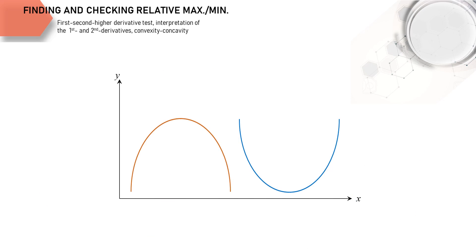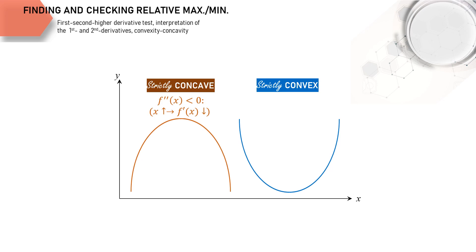Let's return for a moment to these two diagrams again. The curvature of the first function is referred to as strictly concave, while the opposite — the second function — is strictly convex. Functions that have a negative second derivative must have a strictly concave curve, whereas functions that have a positive second derivative must have a strictly convex curve. With these second derivative requirements, a stationary point of a strictly concave function will be a relative maximum, while a stationary point of a strictly convex function will be a relative minimum.